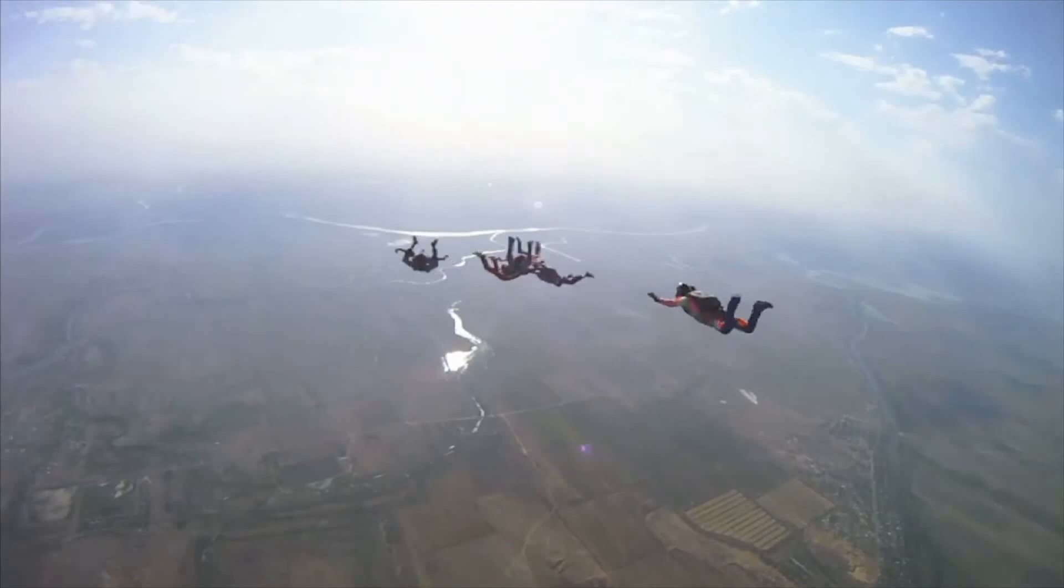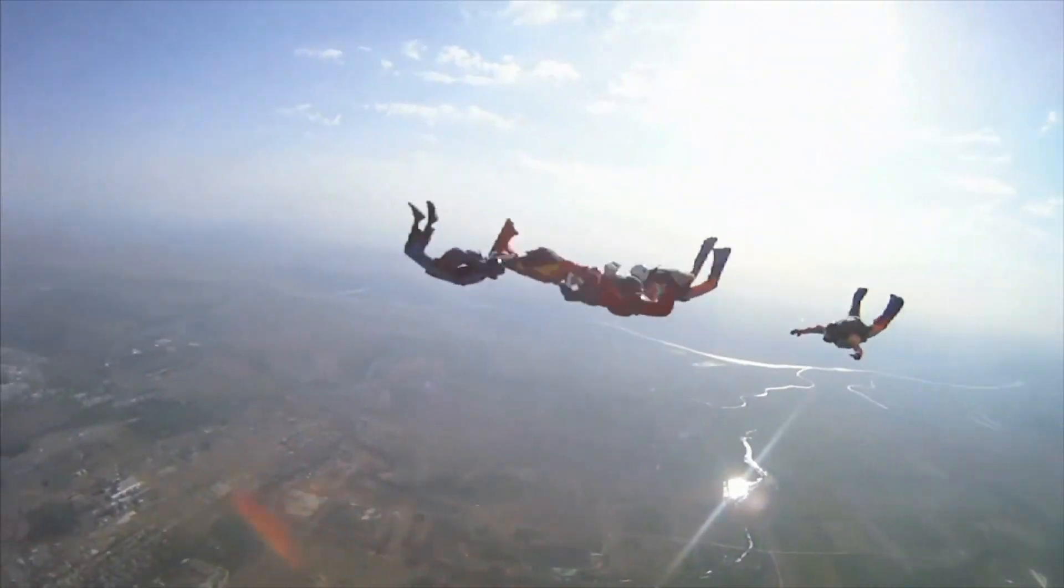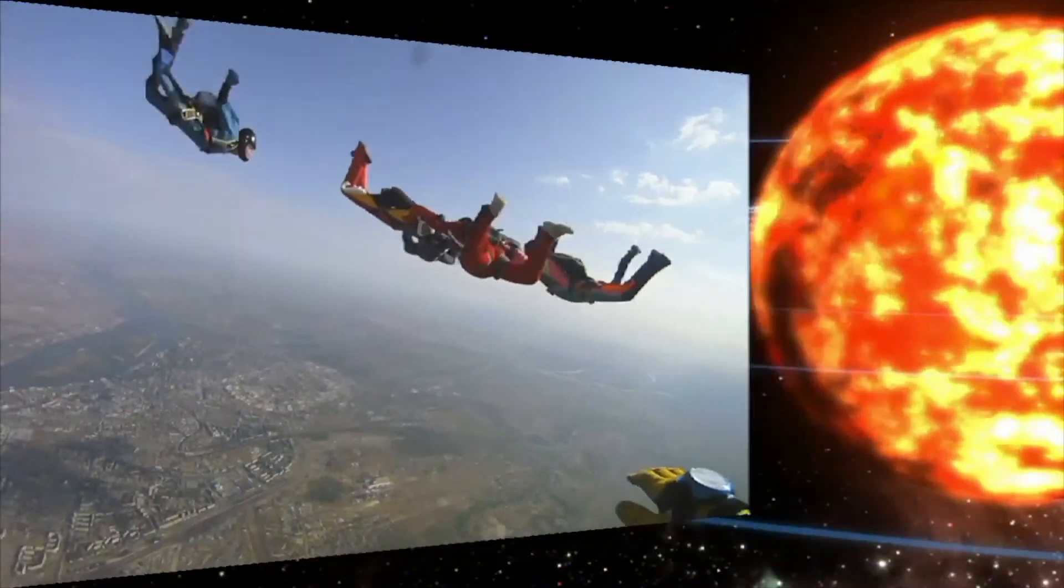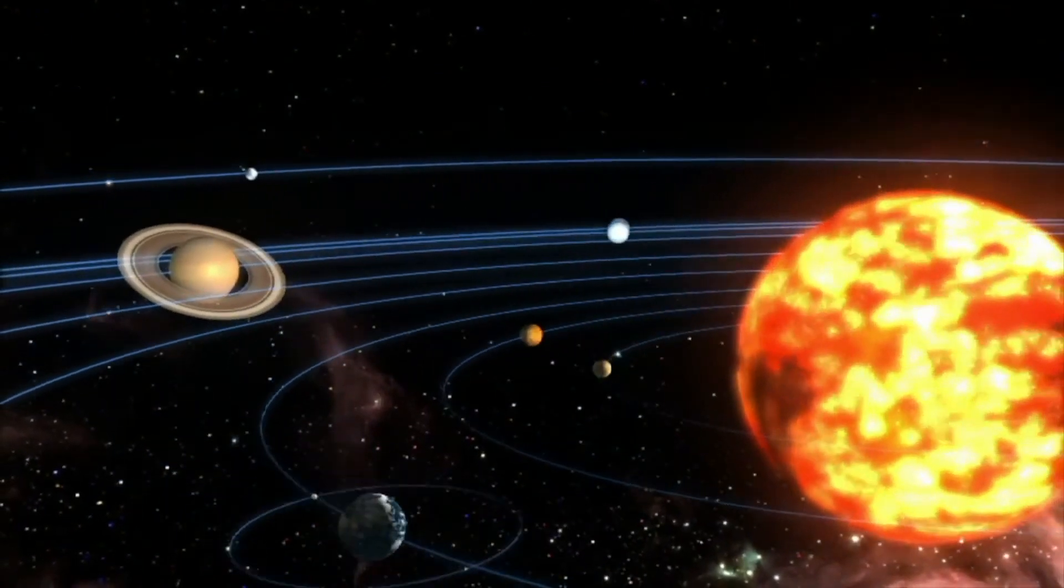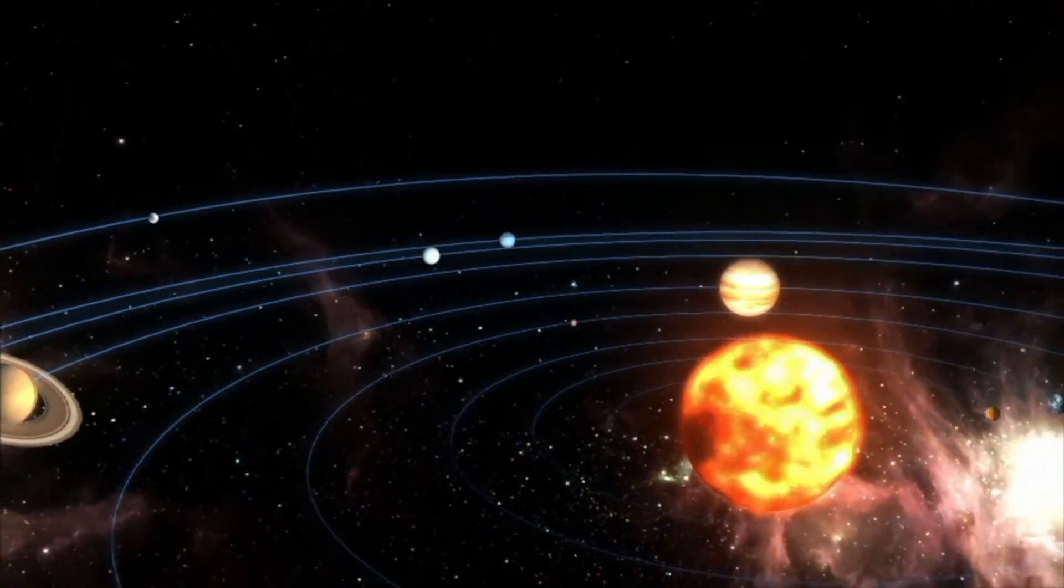Just like the Earth's gravity pulls us down to Earth when we skydive, the Sun's gravity is so strong it pulls the planets into a curved orbit around it.